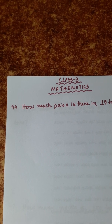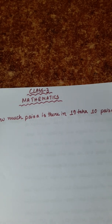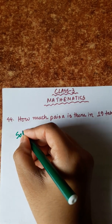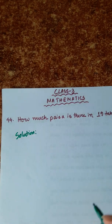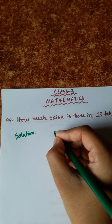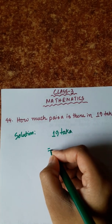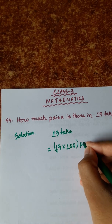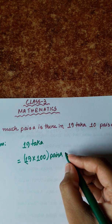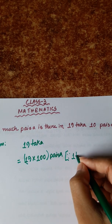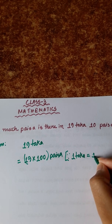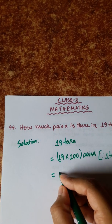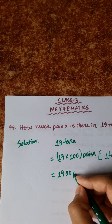Number 44: How much paisa is there in 19 taka 10 paisa? Solution: First we convert 19 taka to paisa. 19 taka is equal to 19 into 100 paisa, since 1 taka is equal to 100 paisa. So 19 taka equals 1900 paisa.